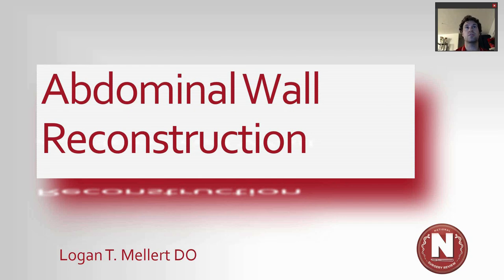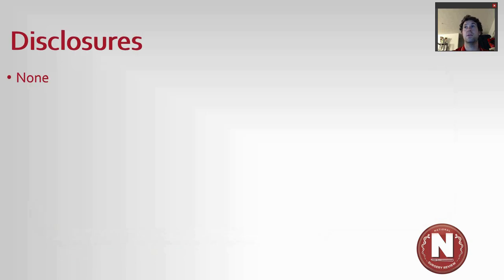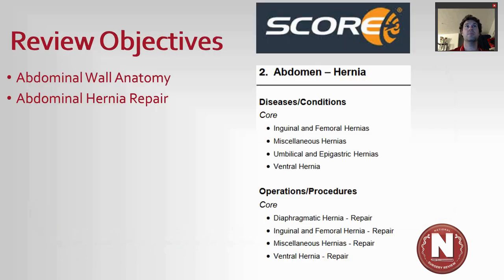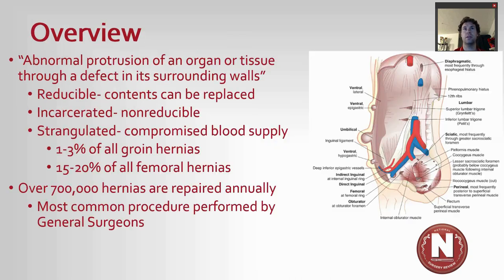This is Logan Meller with National Surgery Review and today we're going to be talking about abdominal wall reconstruction. The objectives include abdominal wall anatomy as well as abdominal hernia repair, focusing on advanced abdominal wall reconstruction. This falls under the miscellaneous hernias and ventral hernias in the SCORE curriculum.